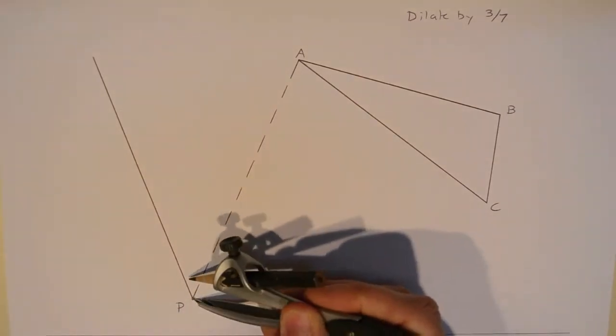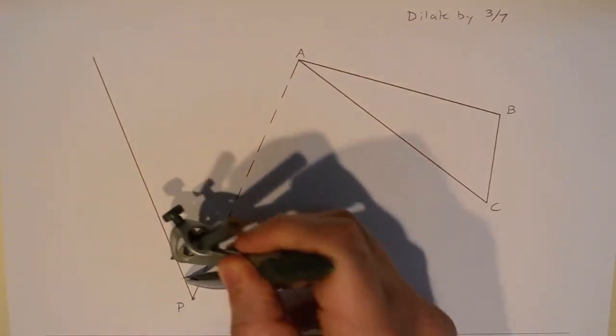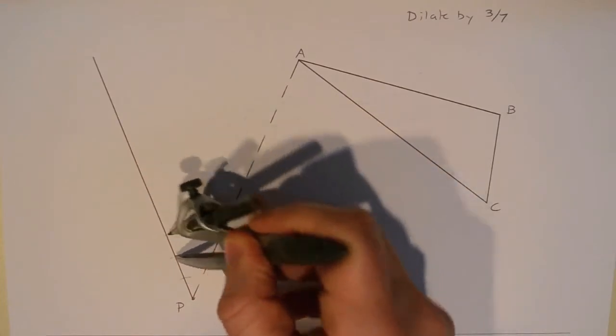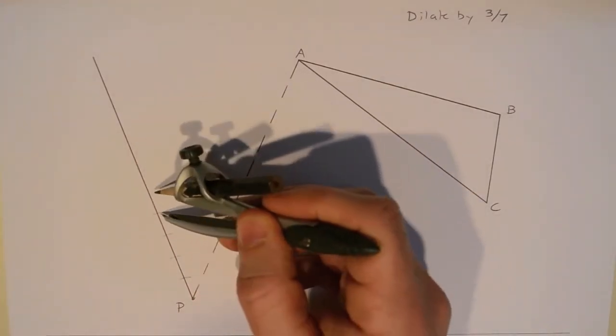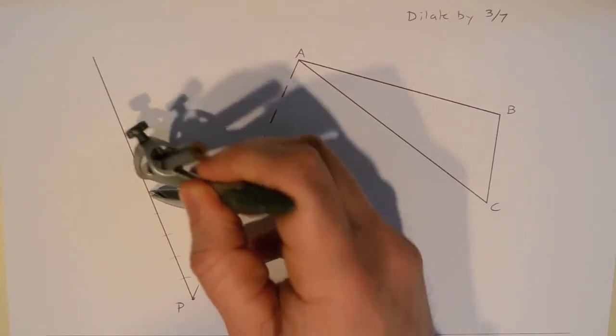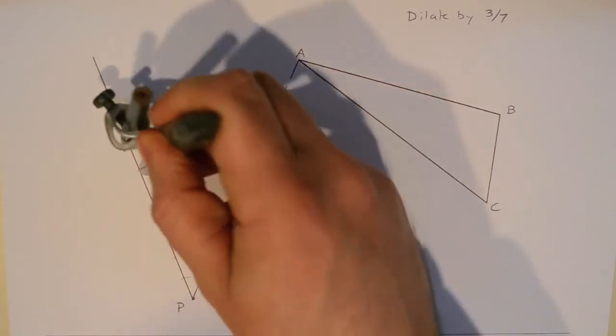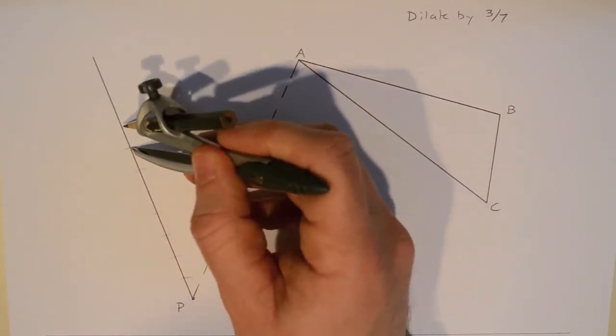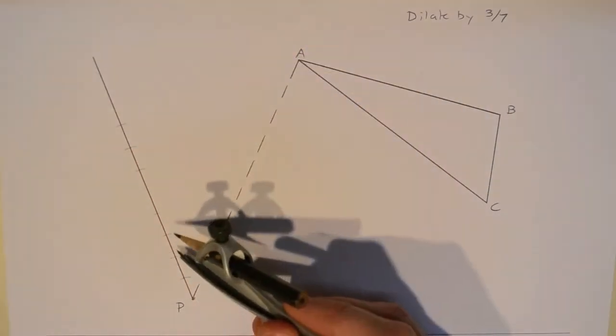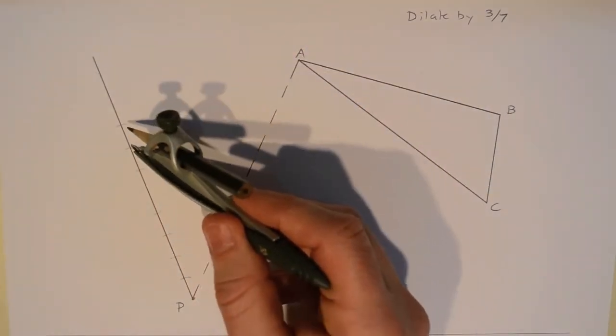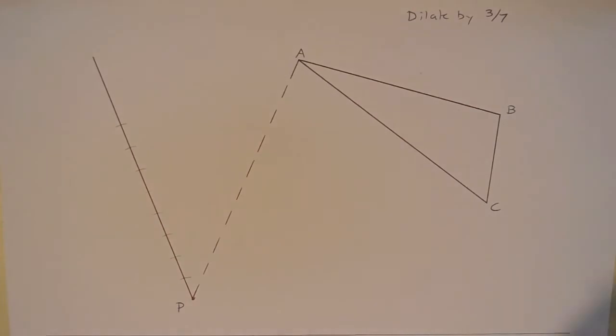So you're going to set your compass up pretty small, and starting at P, you're going to go ahead and start making one mark after another, each congruent, each from where the next mark ended. That one's very light. And sometimes I forget to count as I go, so let's see. We have one, two, three, four, five, six, seven, eight. Okay, well, I only need seven, so that's good enough.